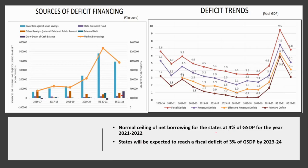Regarding states' fiscal position, the normal ceiling of net borrowing for states is now 4.4% of GDP for 2021-22. So states can increase their fiscal deficit. They are expected to reach a fiscal deficit of 3% by 2023-24.